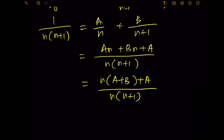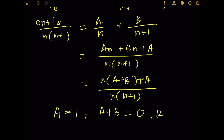Comparing left-hand side and right-hand side, we instantly know A equals 1 from the constant term. Since A plus B equals 0 from the coefficient of n, B equals negative 1. So we have found A and B.